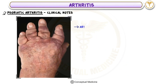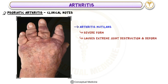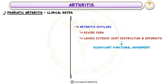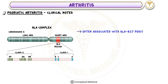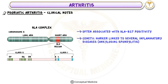Clinical Notes: A severe form of psoriatic arthritis is known as arthritis mutilans, causing extreme joint destruction and deformity with significant functional impairment. Psoriatic arthritis is also often associated with HLA-B27 positivity, a genetic marker linked to several inflammatory diseases including ankylosing spondylitis.